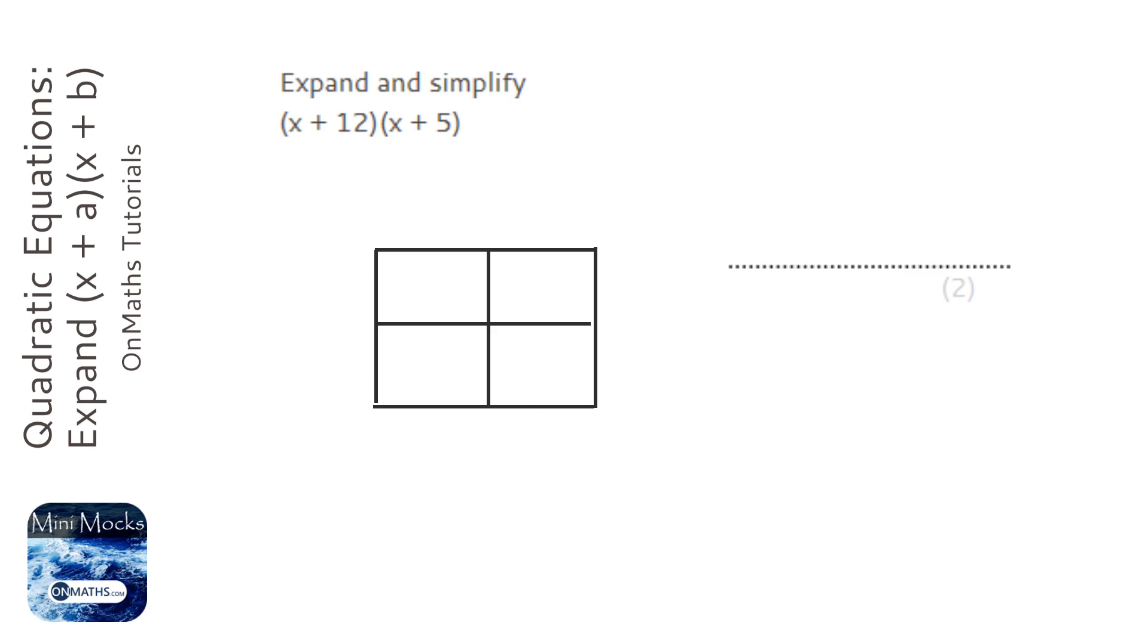So we're going to copy the first bracket into the top and split it up into its terms, so it's x and 12. And then the second bracket goes down the side, so x and 5. And we just times everything together.